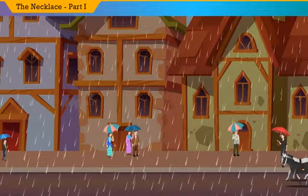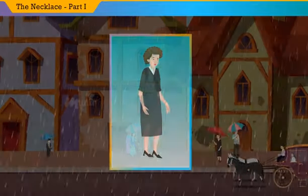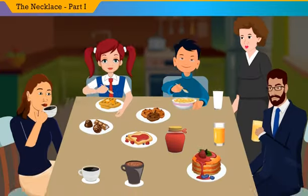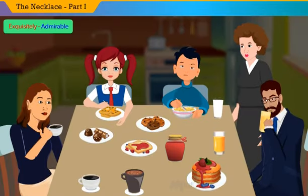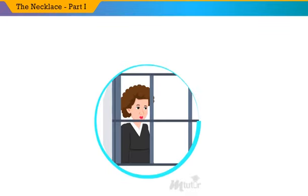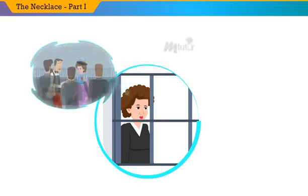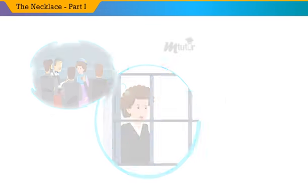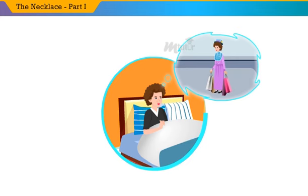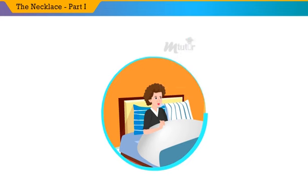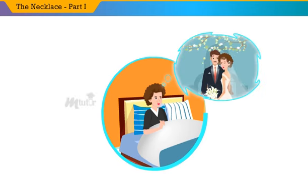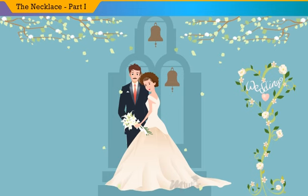Once upon a time in the beautiful city of France lived a gorgeous-looking woman named Mathilde. She was exquisitely beautiful yet born into a family of clerks, as if it was an error of destiny. Though she was simple, she was unhappy, feeling herself born for all the delights and luxuries she had dreamt of. The thought of being unable to lead a luxurious life haunted her day and night. Mathilde was doomed because there was no expectations on her family dowry, no means of being known, respected, and married by a rich or distinguished man. She was married to a plain-living, ordinary clerk.